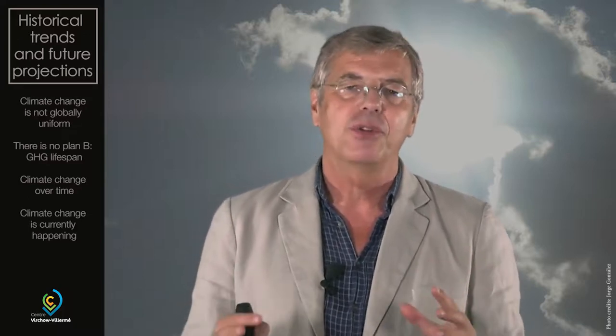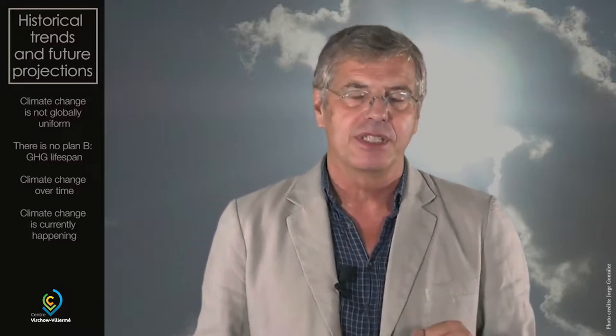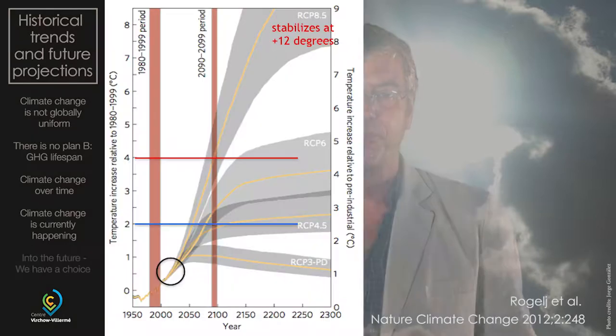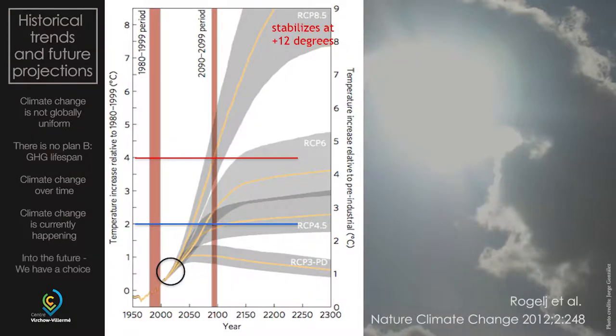Already we have 8,000 scientists in the IPCC working on figuring out the best estimates. So what do these scientists — the IPCC, the Intergovernmental Panel on Climate Change — what models do they have? These are the best models that mankind can come up with today. Let's look at what climate scientists have to tell us about the future.